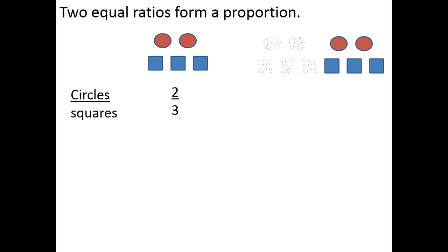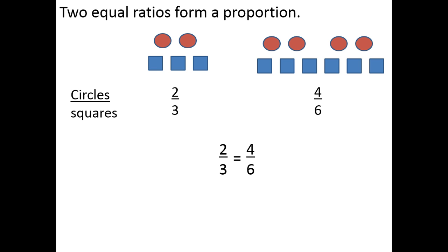Now suppose we double the number of circles and double the number of squares. In that case, we would have four circles compared to six squares. Those two ratios are equal to each other, so they form a proportion. If you look at those fractions, it's something familiar — we already know that 2 thirds equals 4 sixths.